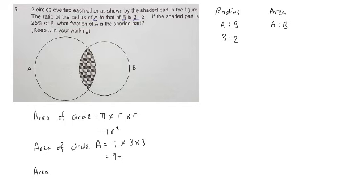Area of circle B equals to π multiplied by 2 multiplied by 2, and that will give me 4π.